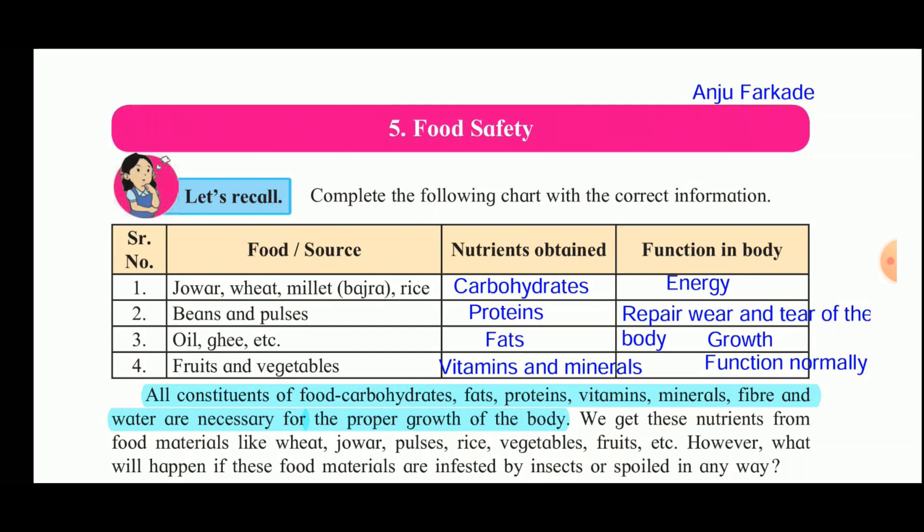Now complete the following chart with the correct information. In lower classes, you have learnt about the different constituents of food which are important for the body. The six constituents of food required by the body are carbohydrates, proteins, fats, minerals, vitamins, fiber, and water. The food which contains all six constituents you have also learnt in lower classes.